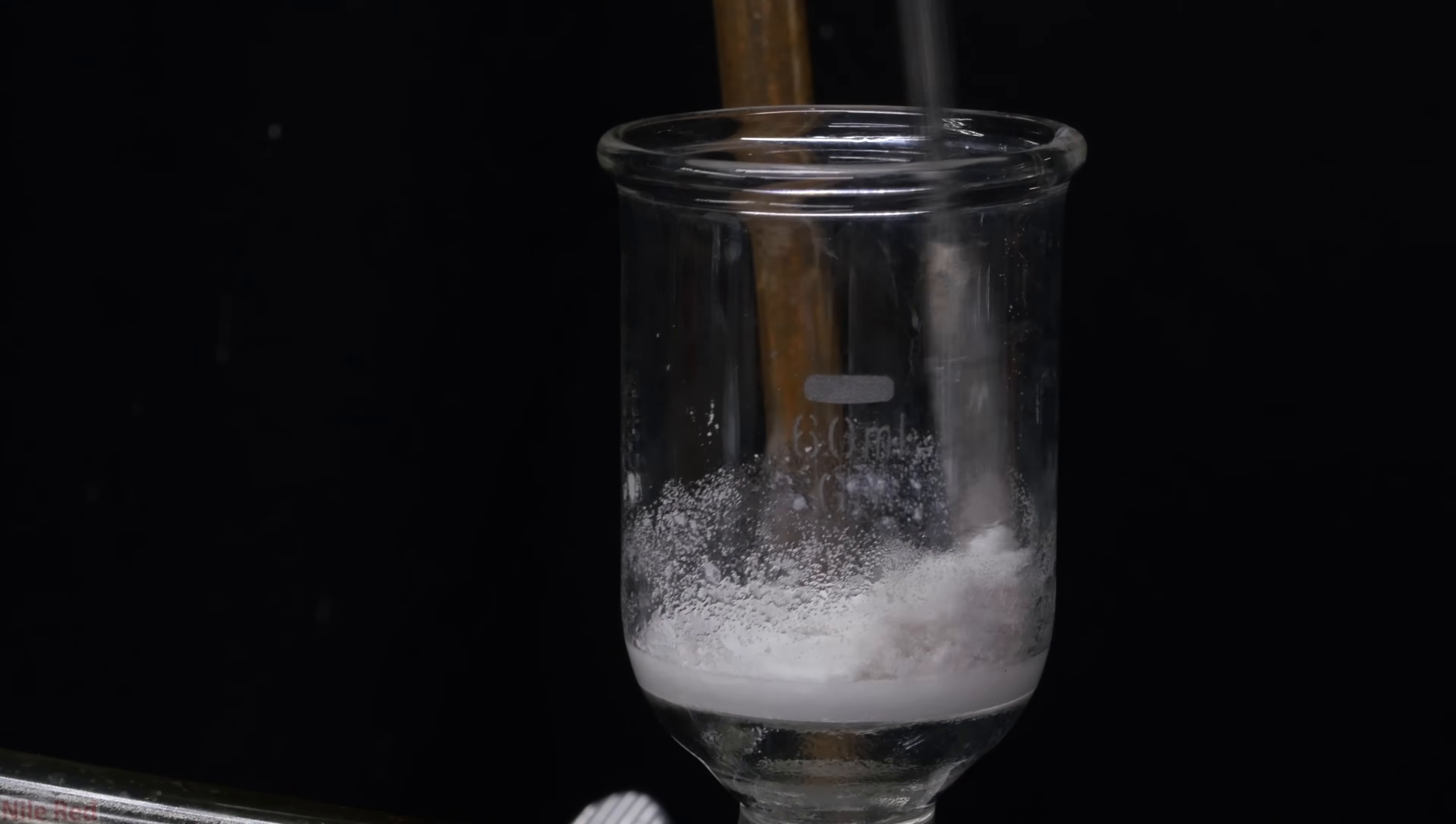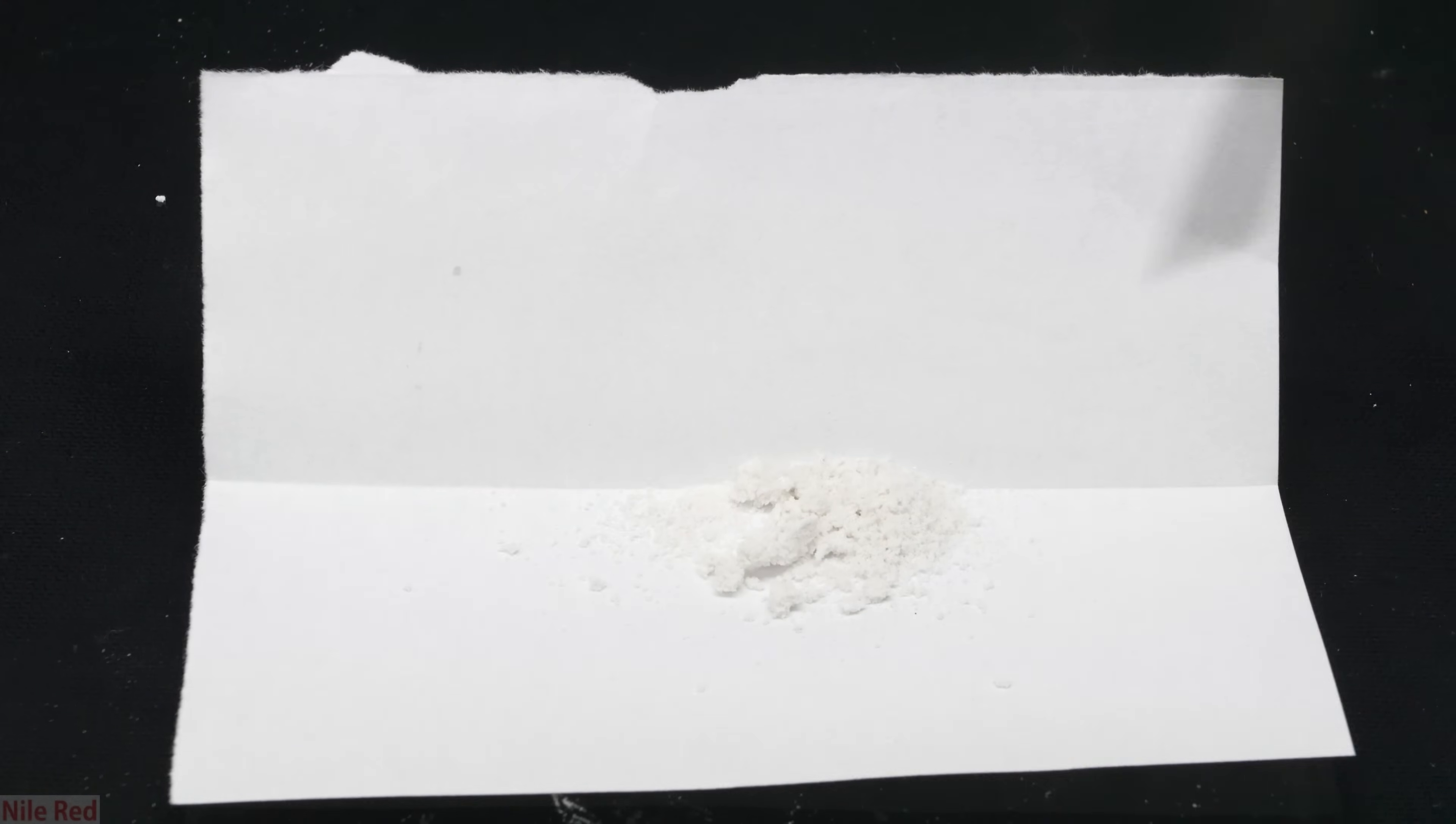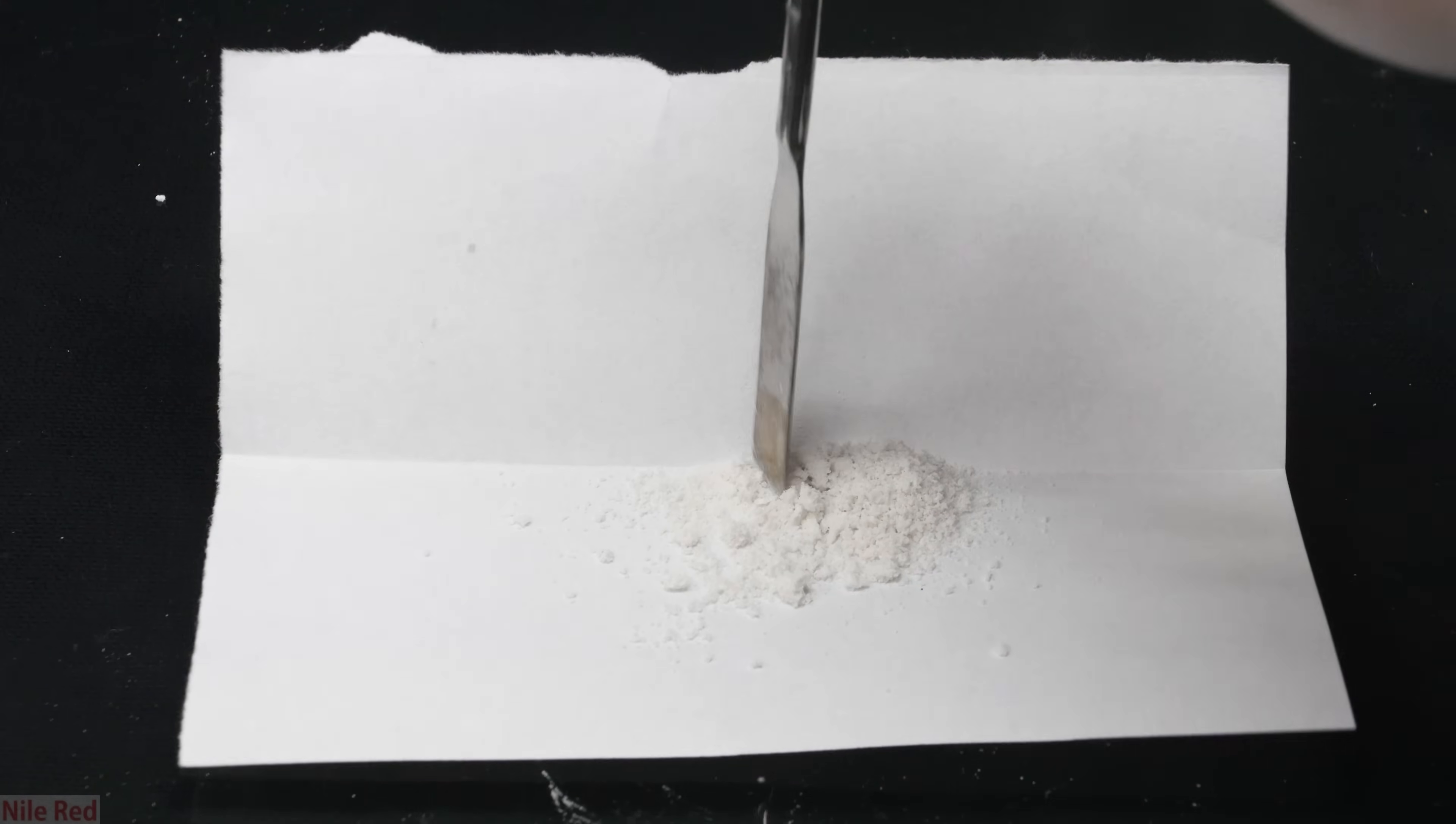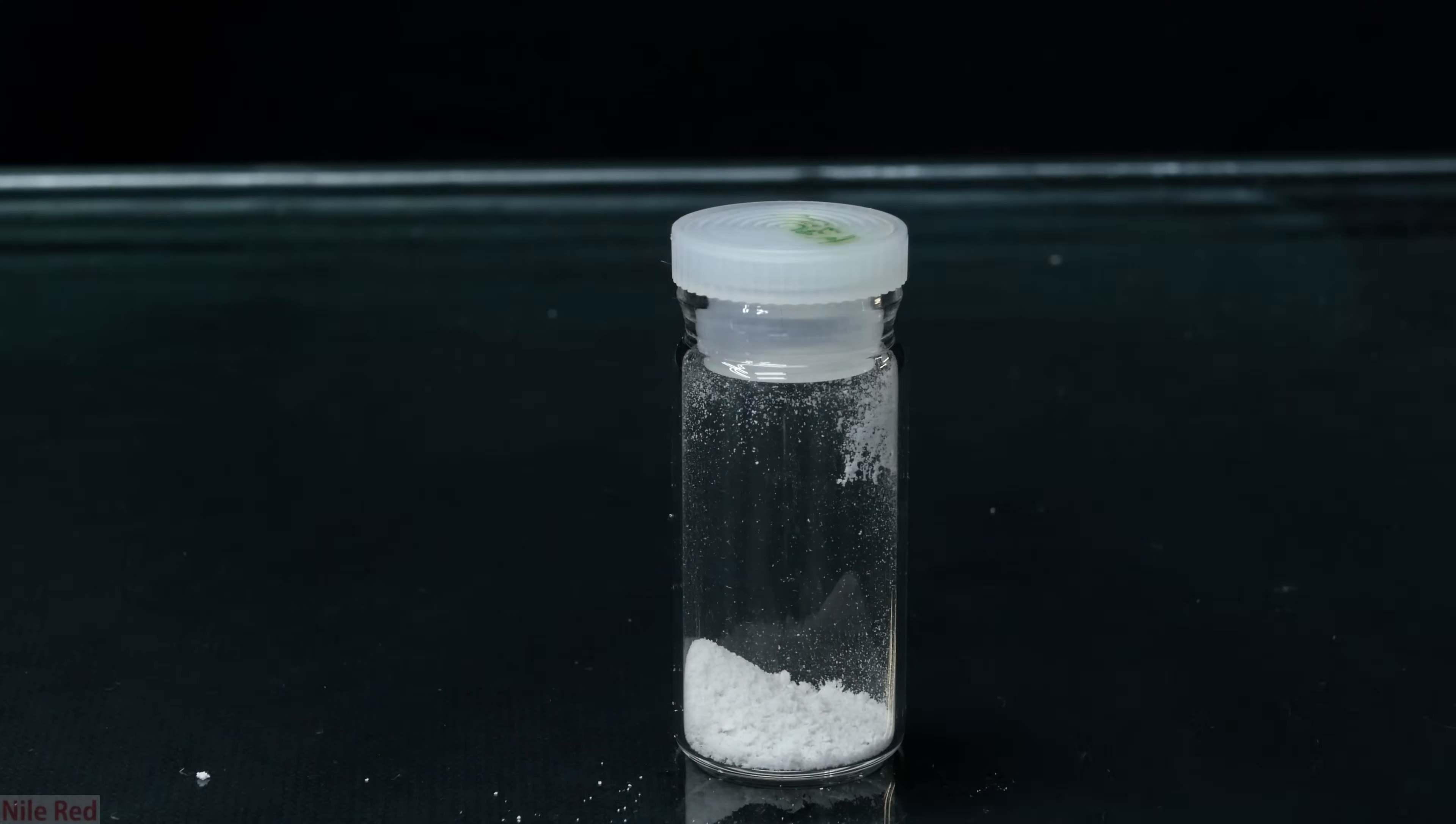Using a spatula, I scrape off as much as I can from the filter. I then transferred it to a small piece of paper to let it dry. Once it was dry, I used the spatula to crush it up and powderize it a little. I then transferred it to a dram vial, capped it, and labeled it accordingly as denatonium benzoate.